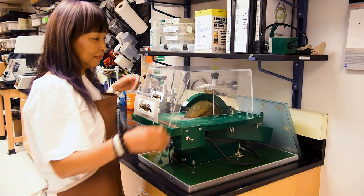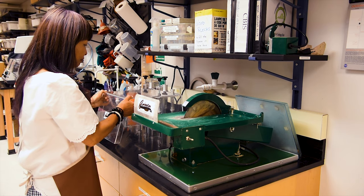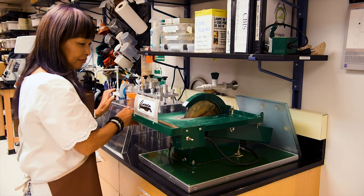While in operation, the splash guard keeps most of the water from spraying onto the operator and into the surrounding workspace. This should always be in place when the saw is running.